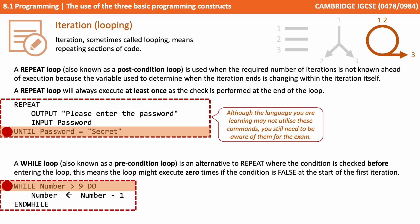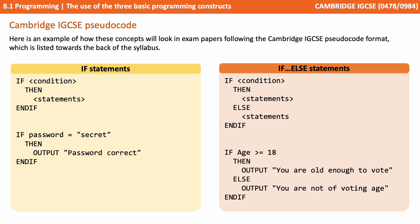So let's actually look now at some actual pseudocode that you will see in your exam that follows the Cambridge IGCSE pseudocode format. You can always find this at the back of the syllabus. So on the left there we have simple if statements and we do 'if' and then we provide a condition followed by 'then' and then a series of statements that execute only if that condition is true. And on the right we have the if-else which allows us to branch in one of two directions depending on if the condition at the start is either true or false.